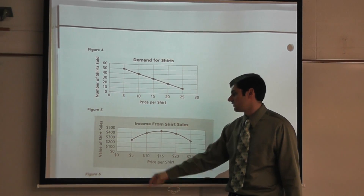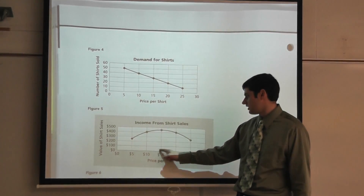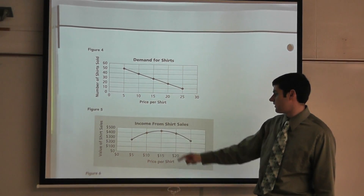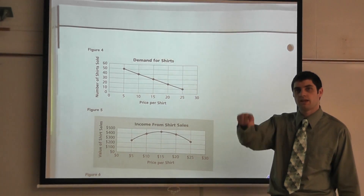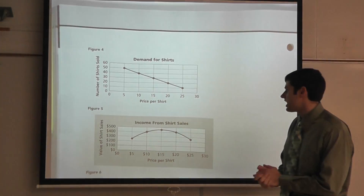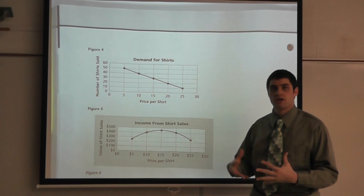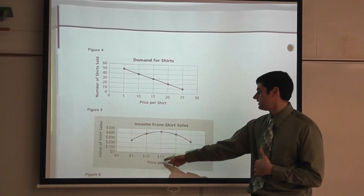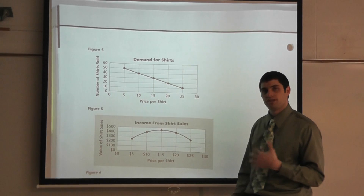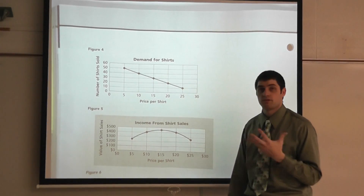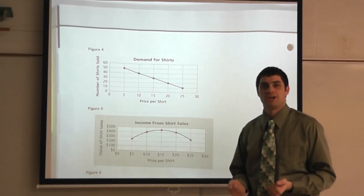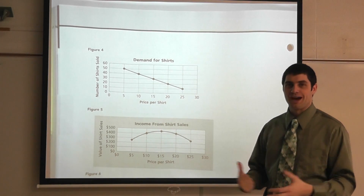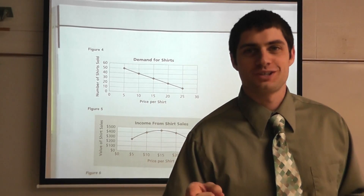For the income from shirt sales graph: at five dollars I'm at $250, at ten dollars I'm at $400, at fifteen dollars I'm at $450 — the peak — at twenty dollars I drop back to $400, and at twenty-five dollars I'm at $250. So fifteen dollars is clearly the best price for maximum income. As we go further, we're going to talk about linear and nonlinear graphs and equations in Variables and Patterns. Thank you for tuning in to Mr. Lehner's Math Extravaganza — we'll see you next time.